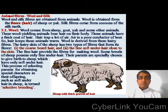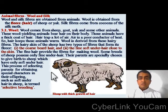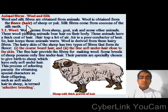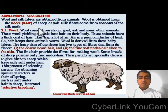Animal fibers: wool and silk. Wool and silk fibers are obtained from animals. Wool is obtained from the fleece or hair of sheep or yak, and silk fibers come from cocoons of the silk moth.